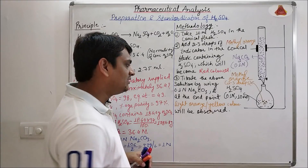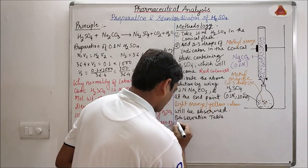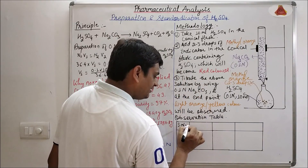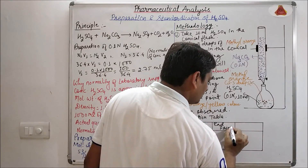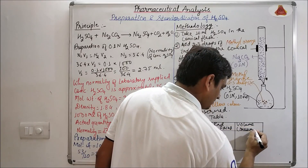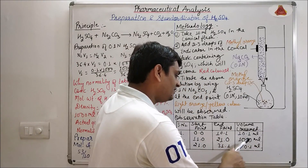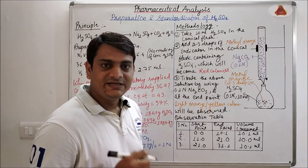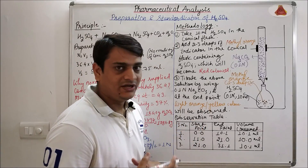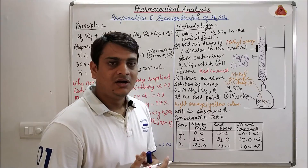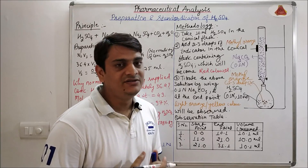We will note the readings in the observation table. The table has columns for serial number, start point, end point, and volume consumed. Here we got two same readings — 10.1 ml and 10.1 ml — meaning it is a precise reading. If we do not get two same readings after three observations, we have to do a fourth or fifth observation until we get two precise readings.